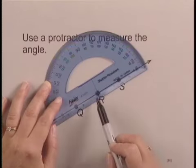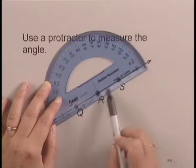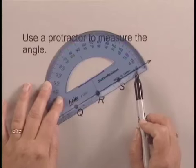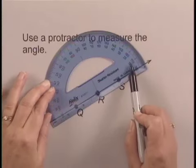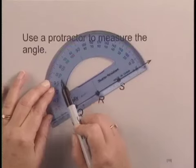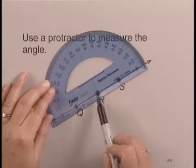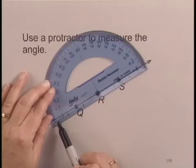To measure it, I can consider one side as the starting side. If I consider this as the starting side, I start on the scale that is marked 0 and go all the way around to where the other side of the angle is seen under the protractor.